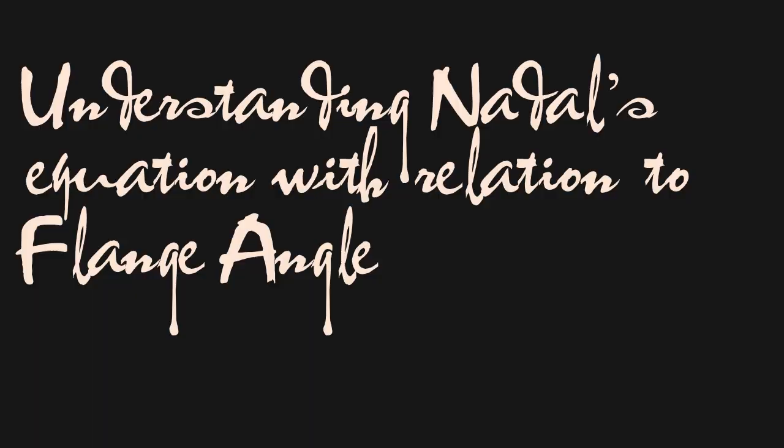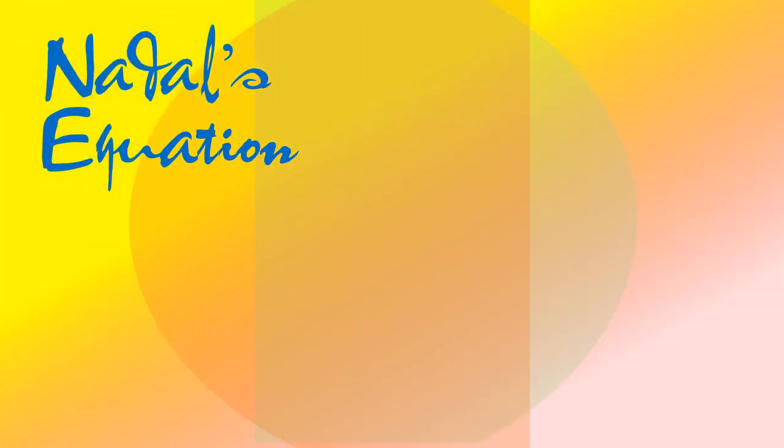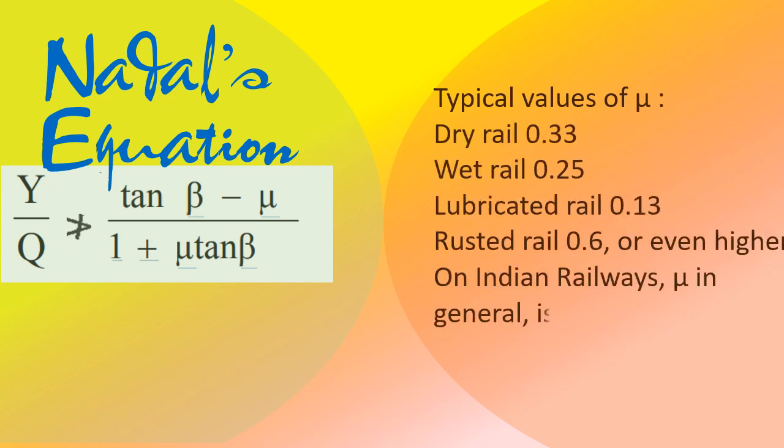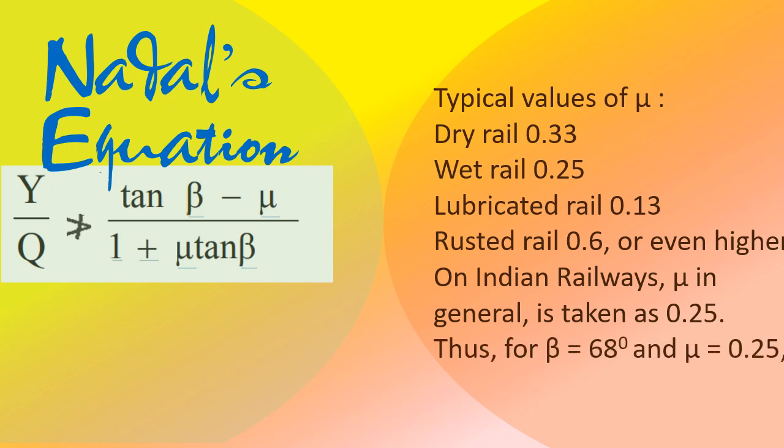So this is Nadal's equation, wherein Y by Q should not be more than (tan β minus μ) divided by (1 plus μ tan β). Here μ is the coefficient of friction: for dry rail it's 0.33, for wet rail it's 0.25, for lubricated rail it's 0.13, and for rusted rail it's generally 0.6 or even higher.